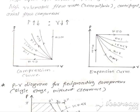The fourth expansion curve is for an isentropic process, or adiabatic process, where the value of n is equal to gamma. The fifth expansion curve is for a polytropic process again, where the value of n is greater than gamma. The last expansion curve is a straight line for a constant volume process where the value of n is equal to infinity.